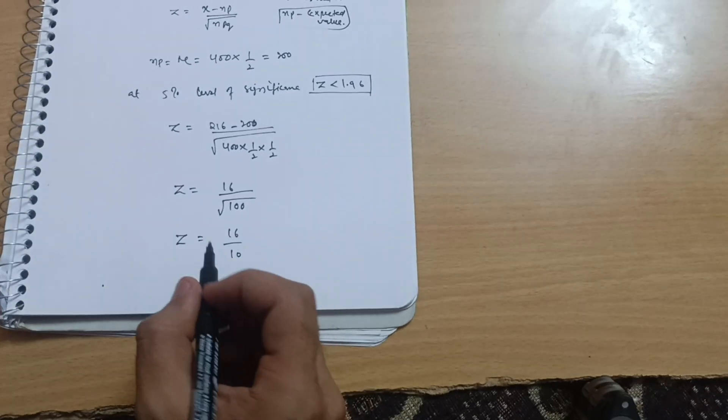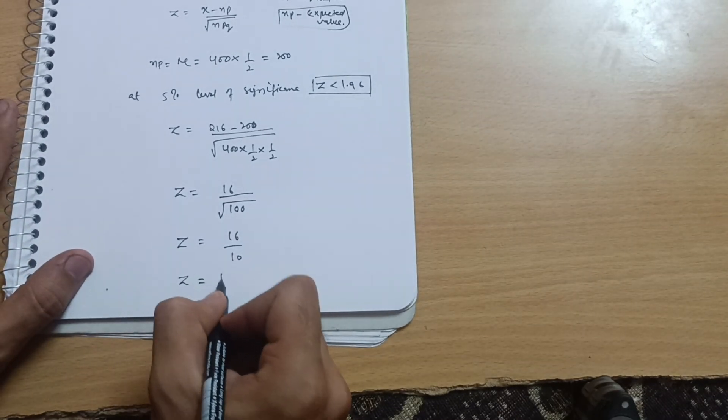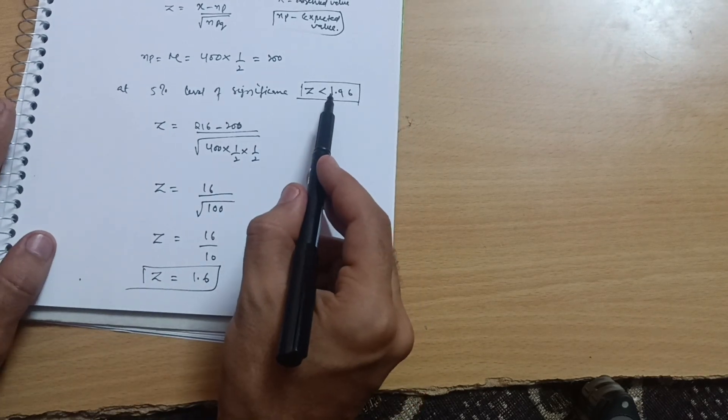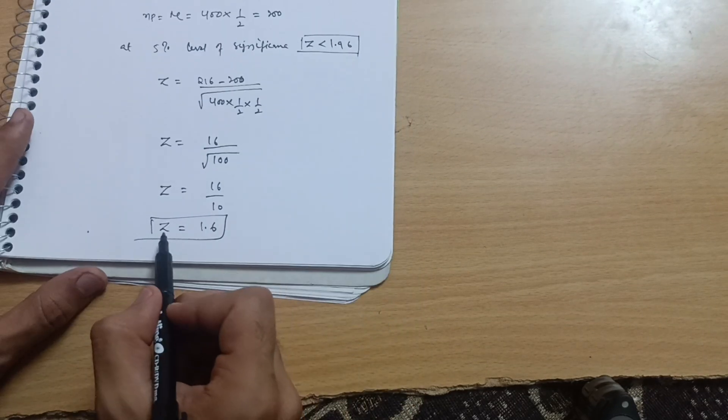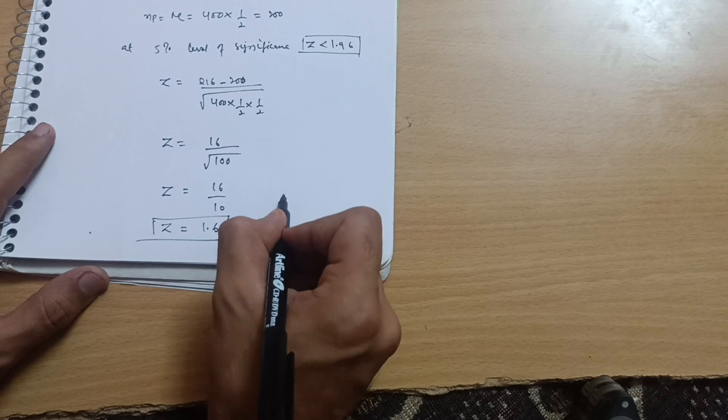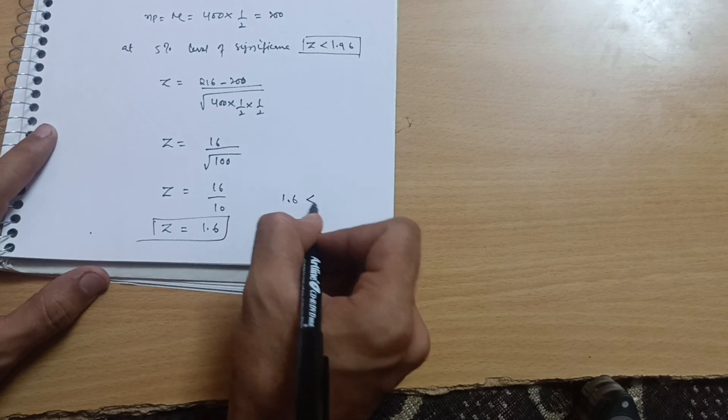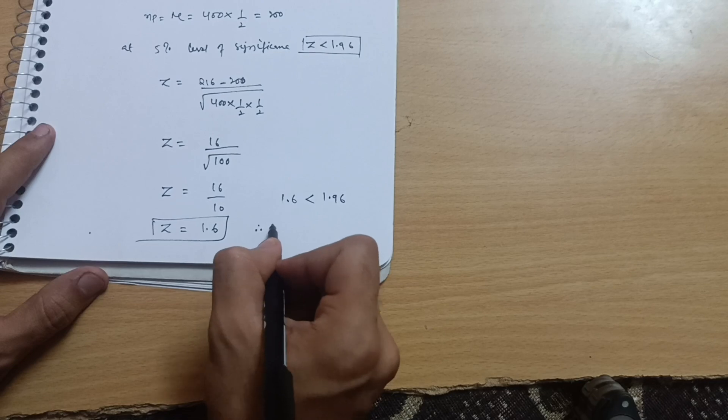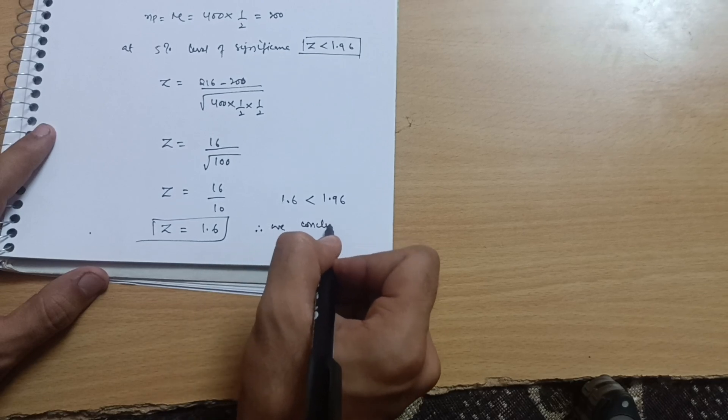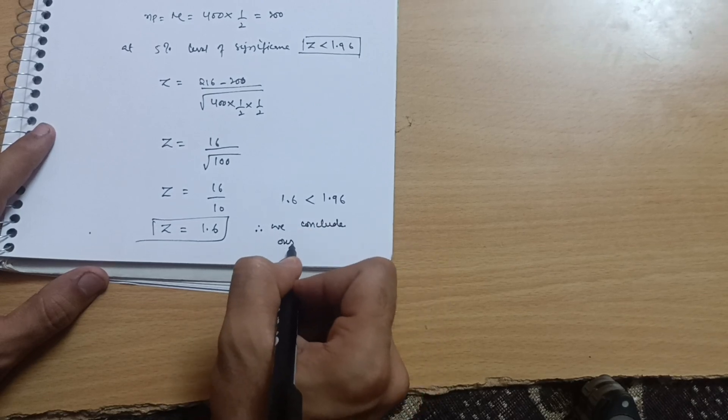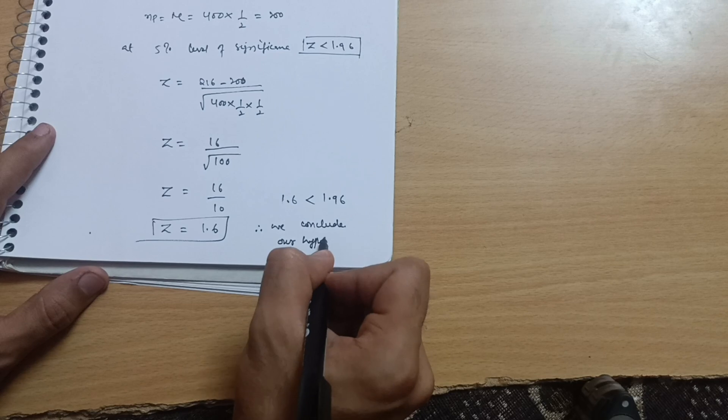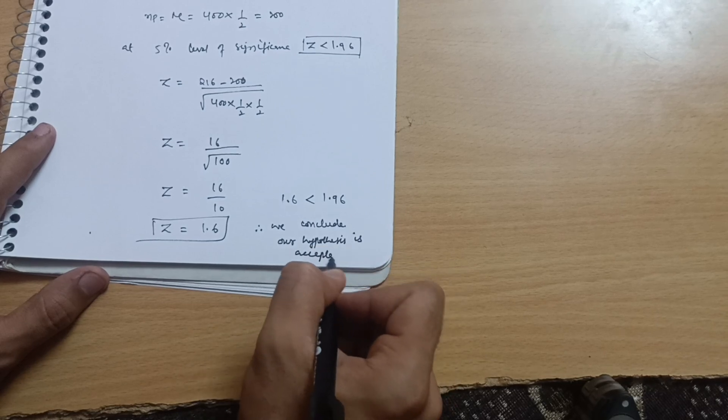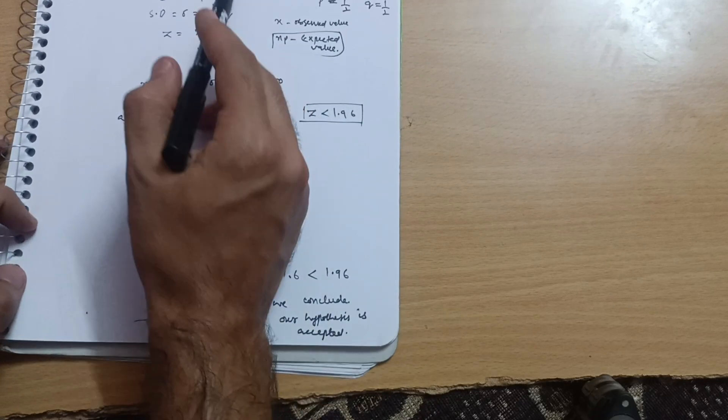So Z is equal to 16 upon under root of 100 is nothing but 10. So Z will come up to 1.6. As you can see, Z should be less than 1.96. Obviously Z equals 1.6, it is less than 1.96, so 1.6 is less than 1.96.